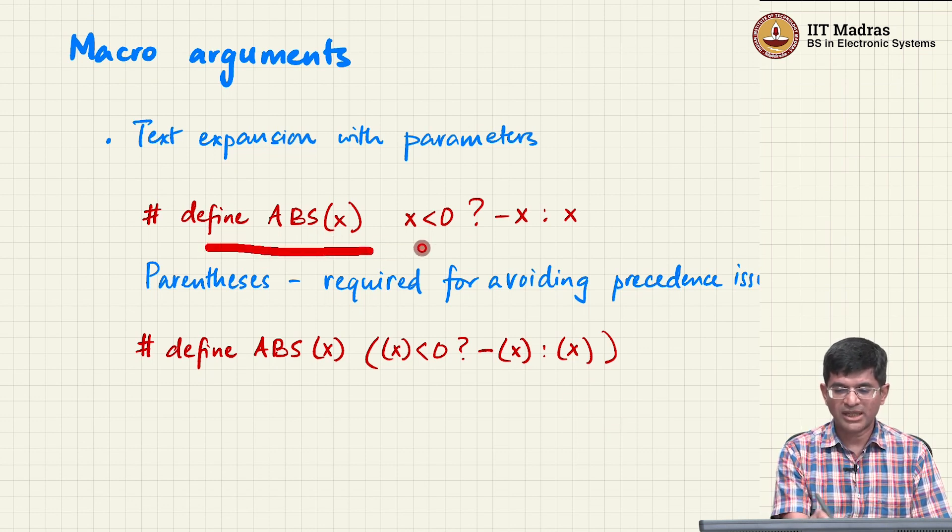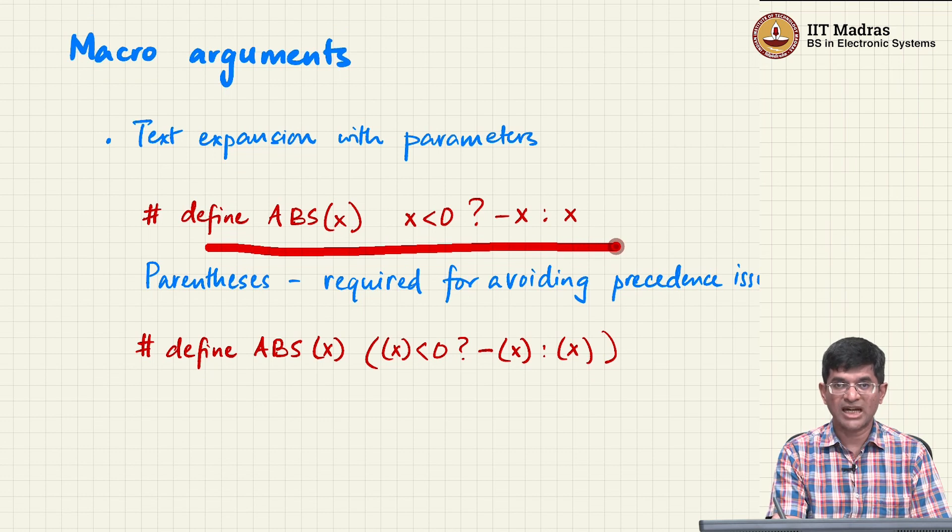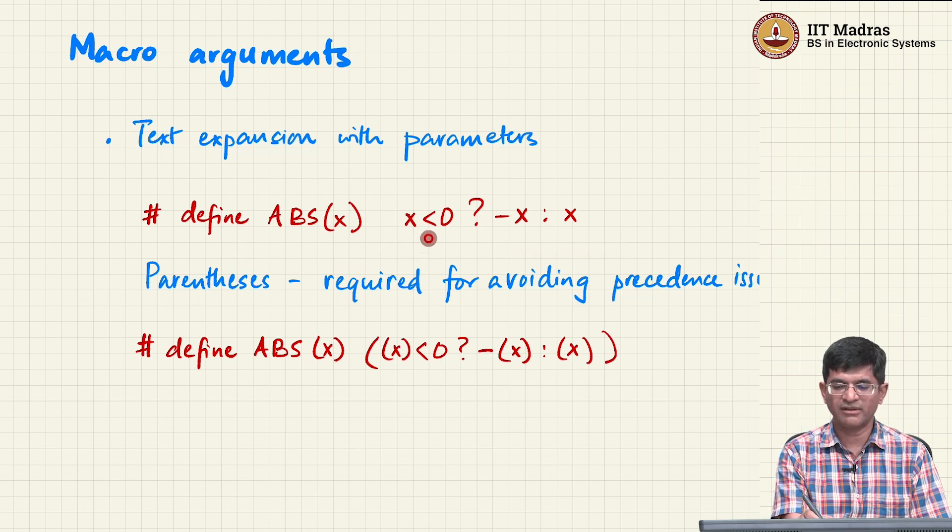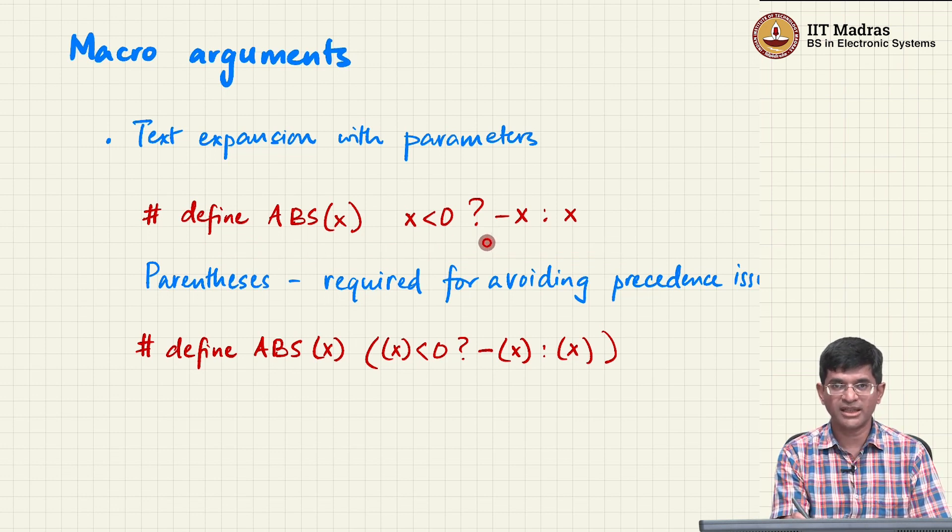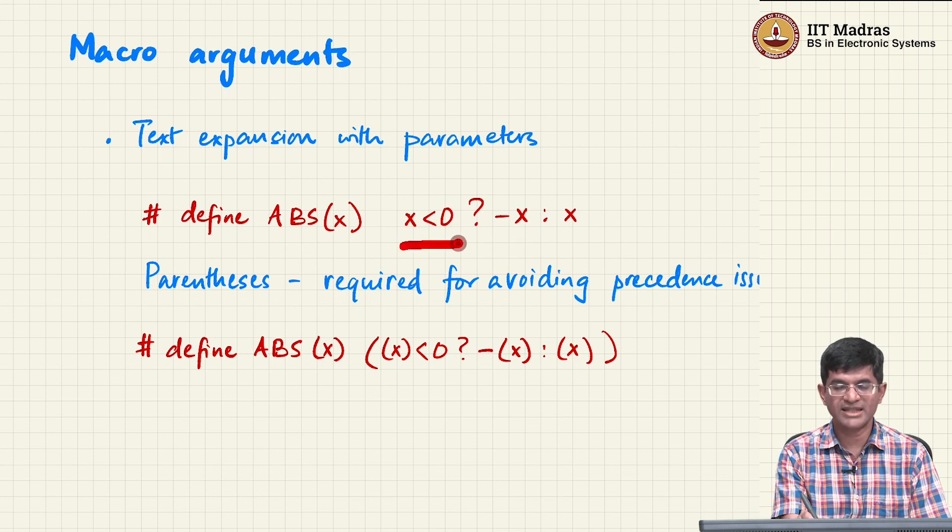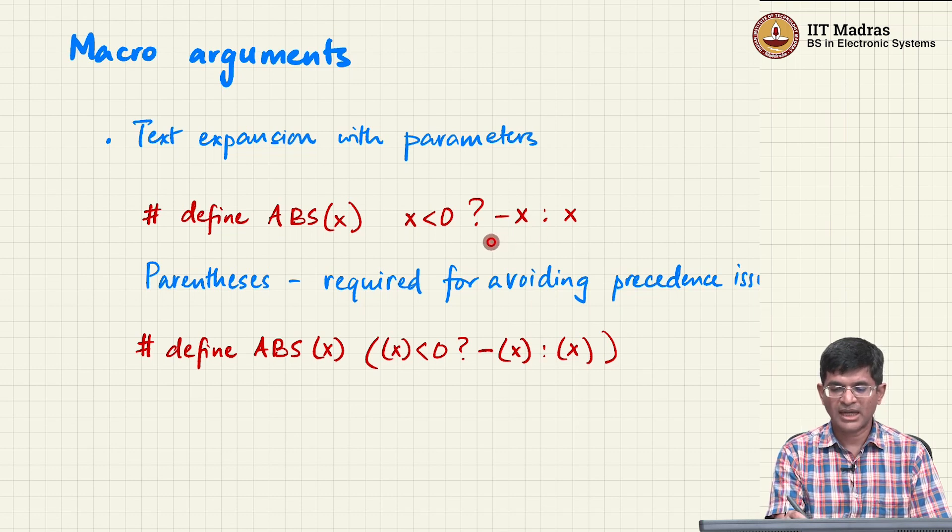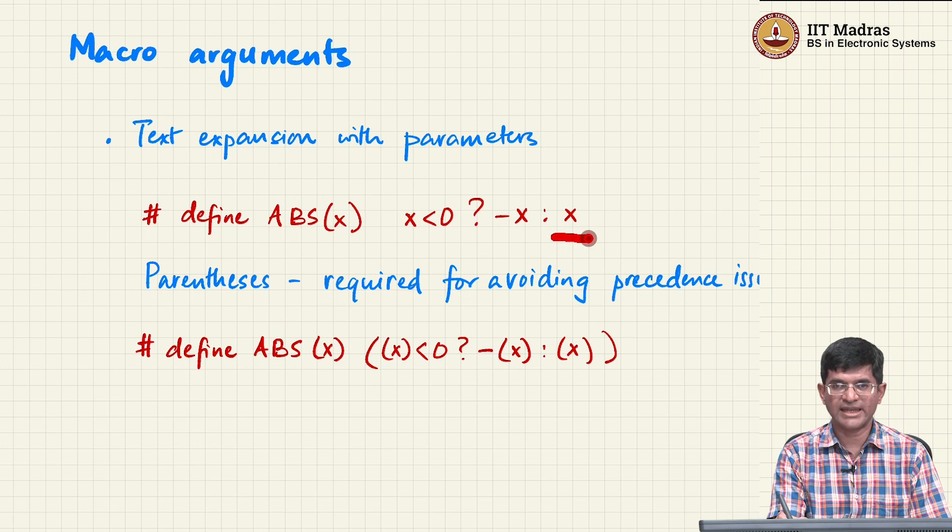For example, I could write a macro which basically finds the absolute value of a variable by performing this computation. Effectively what it is doing is the ternary comparison operator, which basically checks is x less than 0, if so the question mark case it returns minus x so that the result becomes positive, and if not, that is x is greater than or equal to 0, it returns x.